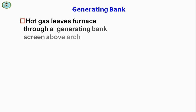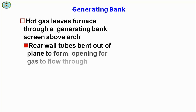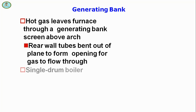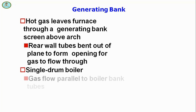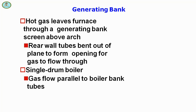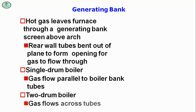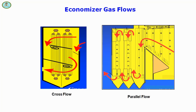Hot gas leaves the furnace through a generating bank screen above the arch. Rear water tubes are bent out of plane to form an opening for gas to flow through. In a single-drum boiler, gas flow is parallel to the boiler bank tubes. In a two-drum boiler, gas flow is across the tubes.